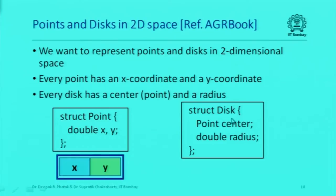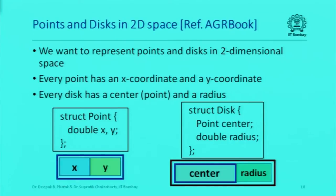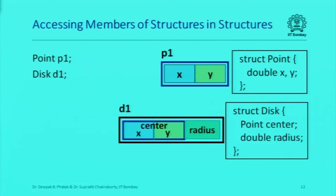A disc has a center which itself is a point, and a radius of type double. So an object of the disc structure will have two members — center and radius — but center itself is of type point, so center itself will have two members x and y. This is hierarchical structures. An object p1 of type point or an object d1 of type disk can be initialized in the usual way.